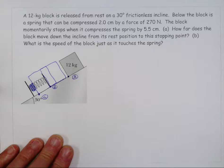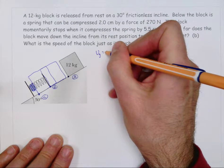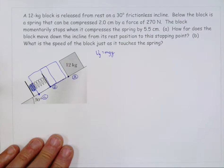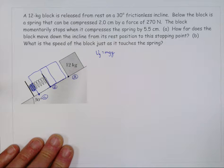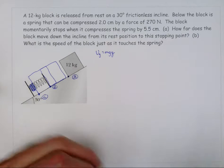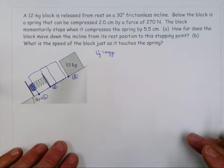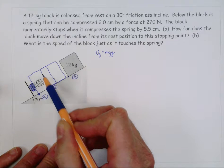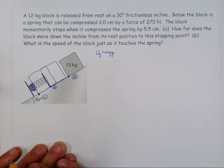Another important thing you should always do is identify where you want y to be equal to zero. That's because when you calculate gravitational potential energy, it has the y coordinate right there in the equation. You can choose anywhere you want for y equals zero — you just have to be consistent once you've made that choice. Some locations make your math work out more easily, and lots of times I will choose the relaxed location of the spring to be where y equals zero.